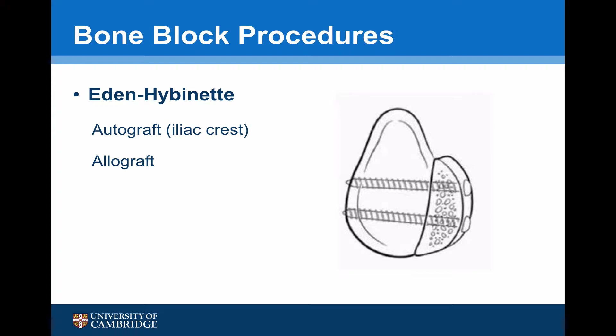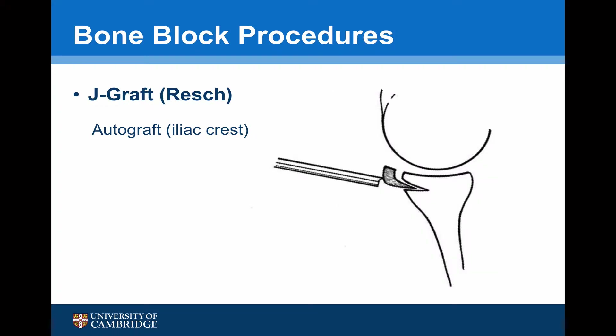This is commonly undertaken either using an autograft — normally a tricortical iliac crest graft — or an allograft that is simply screwed onto the front of the glenoid. There are less commonly performed bone block procedures, the most popular being the J-graft, popularised by Resch, which involves using a crafted iliac crest autograft inserted into an osteotomy at the front of the glenoid and held in position by repairing the capsule.